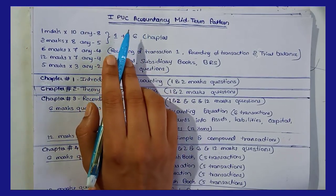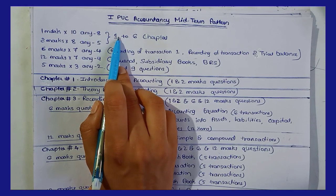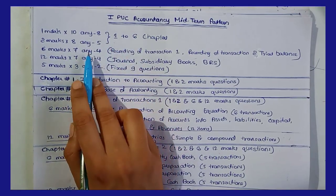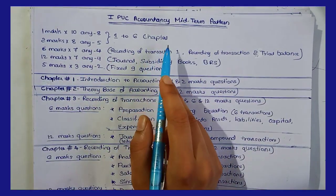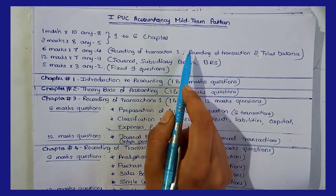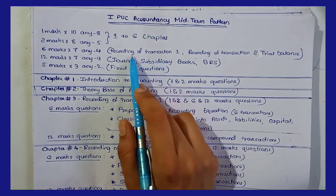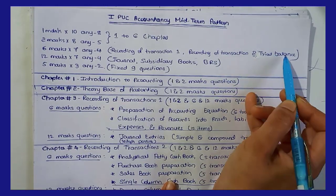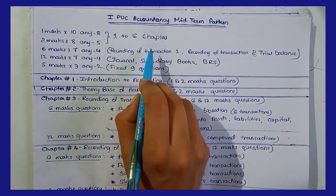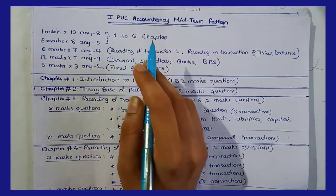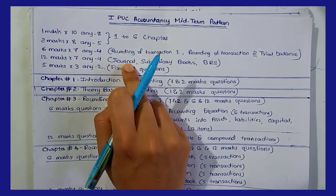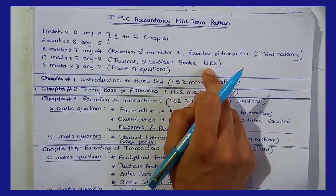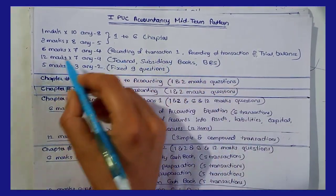If you have questions in other sections, you will see the number of questions in this section. There are seven questions in this section. Chapter 3 — Recording of Transaction 1, the Journal chapter — carries a 6 mark question. Recording of Transaction 2, Subsidiary Books and Trial Balance also carry 6 mark questions. Chapters 3, 4, and 6 carry 6 mark questions, and chapters 3, 4, and 5 — Journal, Subsidiary Books, and BRS — are called 12 mark questions.